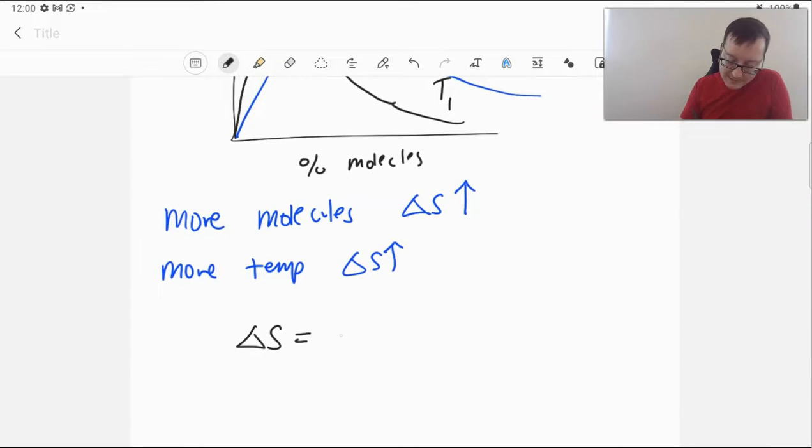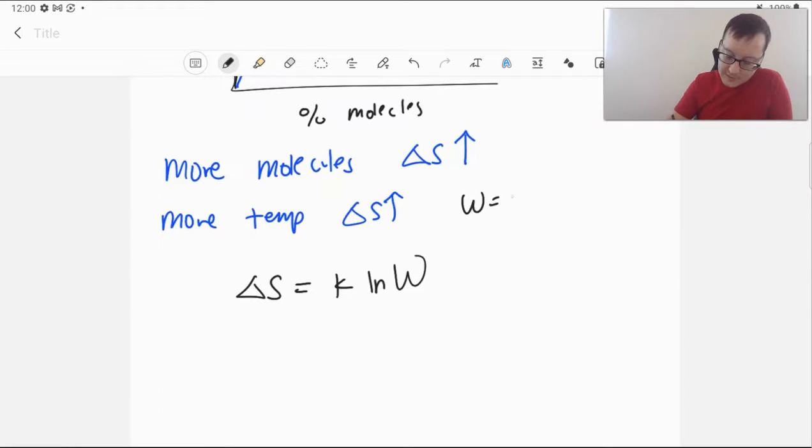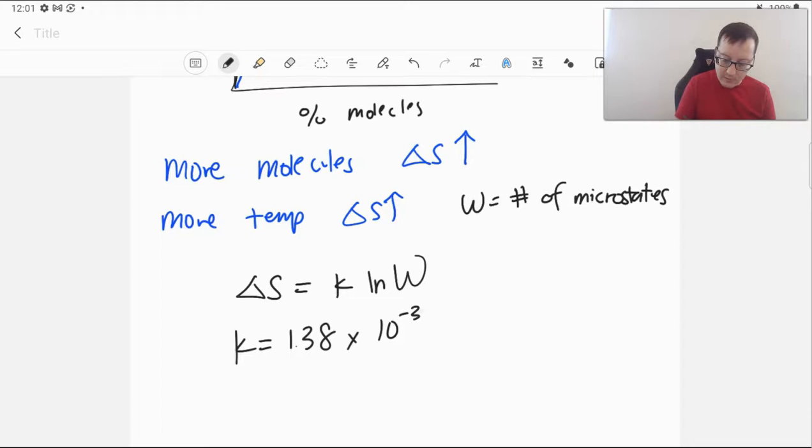But we can relate delta S to the number of states within the system. This is not an equation we're going to necessarily worry about calculating. But it relates the number of states available, or microstates, we can say. And as we see, with temperature and molecules, that tends to get very large. So it's still a constant. And then we have Boltzmann's constant, k, which is 1.38 times 10 to the negative 23rd joules per Kelvin. That's the Boltzmann constant. We will use that later on in your chemistry career here.